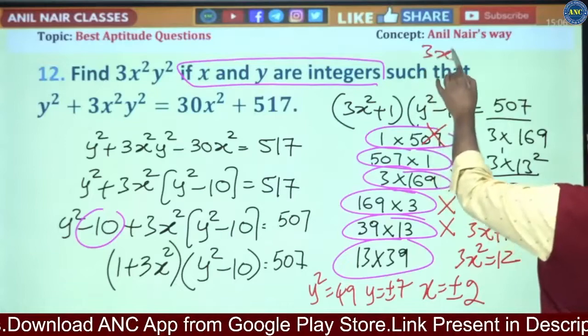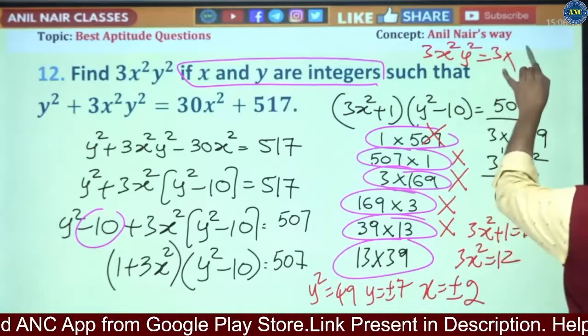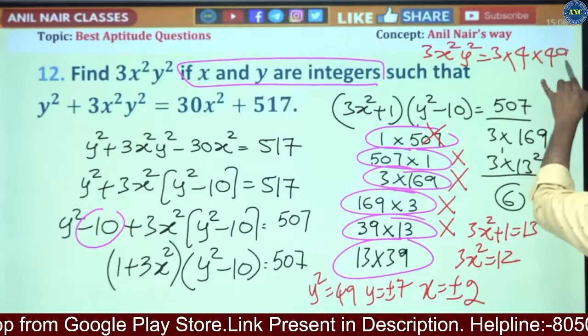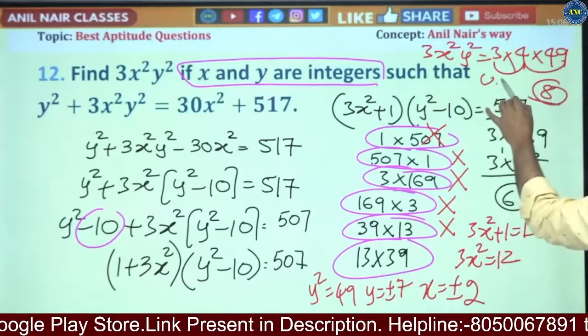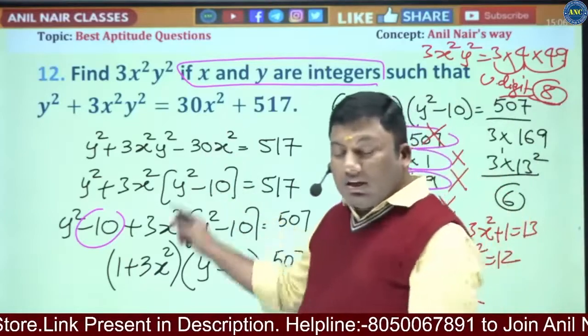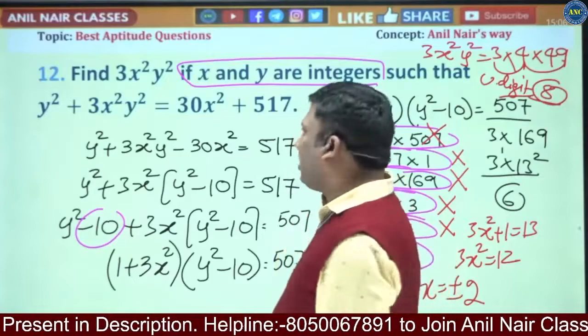So the answer is 3x²y². 3 × x² = 4, y² = 49. 3 × 4 = 12, 12 × 49 = 588. Answer unit digit should be... I want to remove the answer options. Why? Because stupid answer options are kept.